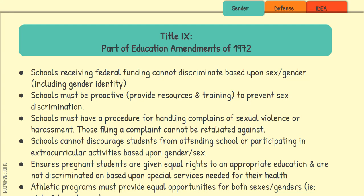For example, schools can't put all resources into a male football team while discouraging participation in a girls' team. You can't discriminate or discourage students from one or the other. Another issue covered by Title IX, especially in high schools, is the pregnancy issue. Title IX states that pregnant students have equal rights to their free appropriate public education and cannot be discriminated against based upon the special services needed for their health.